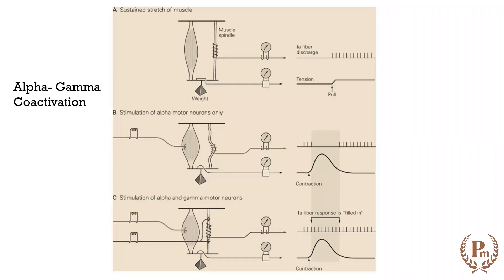Let me tell you what alpha-gamma coactivation is. As you can see in the slide, let me take three situations. As we know, stretch is the stimulus for the muscle spindles, which are stretch receptors. This is one situation where you have given a weight to the muscle — there is stretching of the muscle.